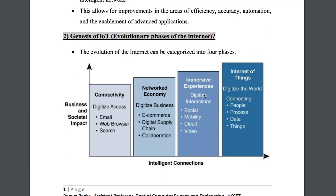In summary, the IoT phase connects people, processes, data, and things. This is the Genesis of IoT — the Evolutionary Phases of the Internet. The four phases are Connectivity, Networked Economy, Immersive Experiences, and Internet of Things, based on their business and societal impact through intelligent connections.